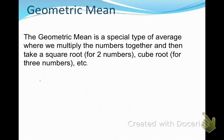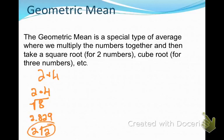So for example, if I have the numbers 2 and 4, to find the geometric mean I would multiply those two numbers together and then take the square root of that number. I'm going to either answer in a decimal or simplest radical form, depending on what I'm being asked to do.